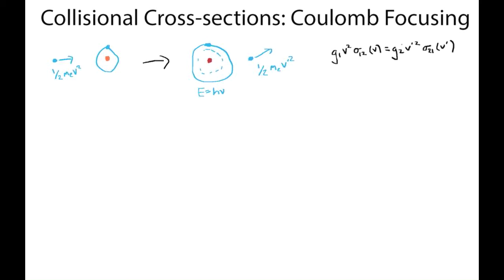So we can relate the cross-sections for interaction on both sides of the interaction here, but what we don't know how to do yet is to get one of these cross-sections. So we're going to focus on computing the cross-section for excitation.